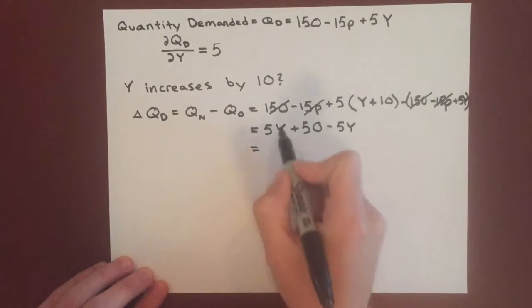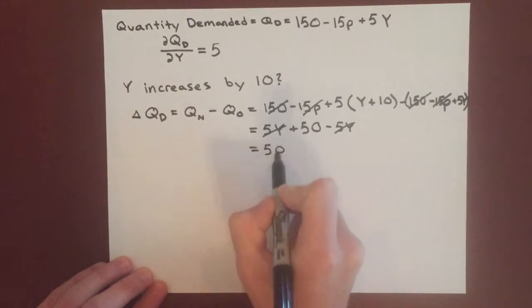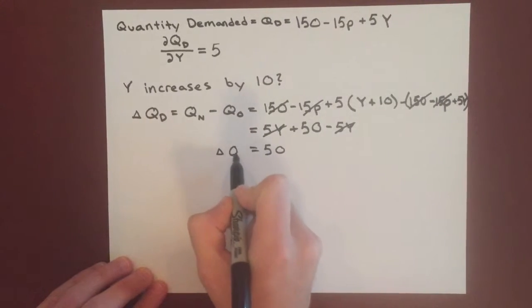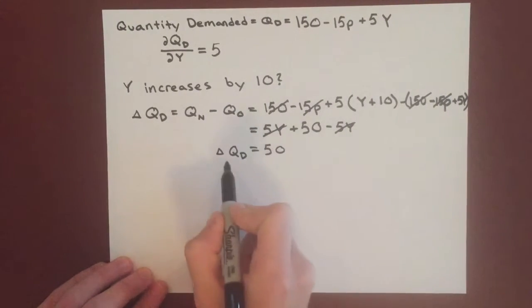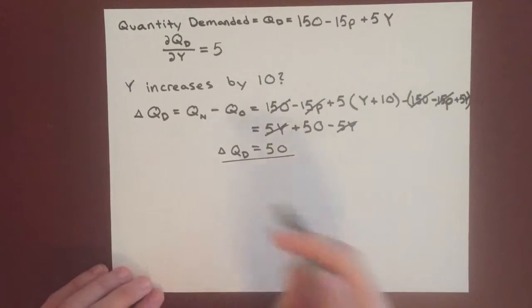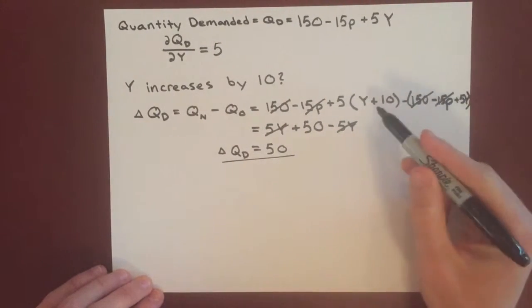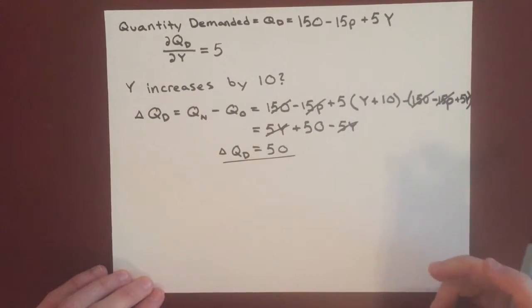So we can cancel these 5Y, and we get the change in quantity demanded equals 50. Just what we thought, you can tell by looking at it, but sometimes it's helpful just to double check and do it all out.